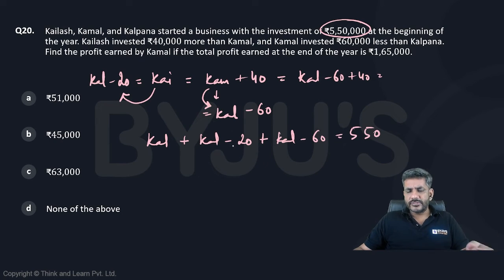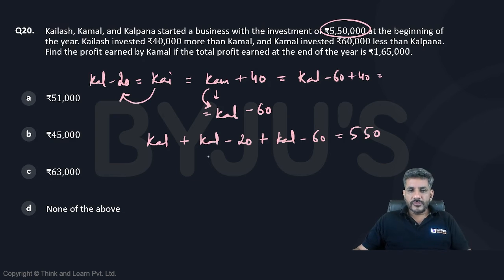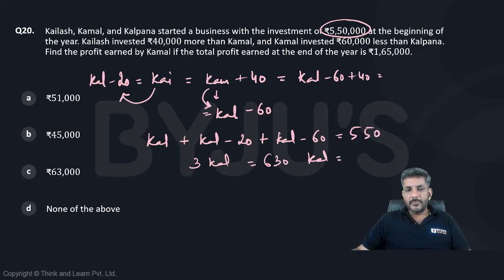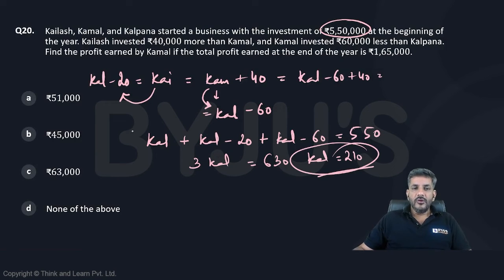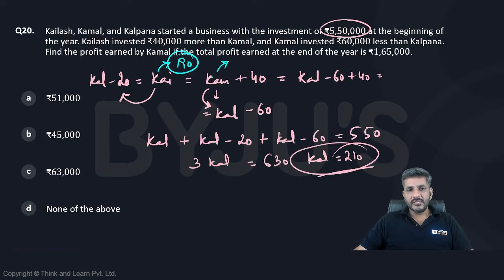I am writing everything in thousands, so I have written 20, 40, and 60. Now 3 times Kalpana, minus 80 goes to the other side giving 630. So Kalpana's amount is 210,000. From there, Kailash's amount is 210 minus 20, that is 190, and Kamal's is Kalpana minus 60, that is 150.